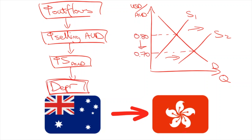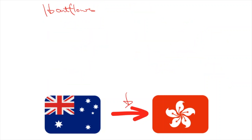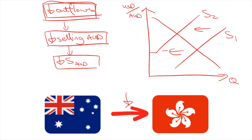So the more money we send, the greater the supply, leading to a depreciation. And conversely, when we stop sending money, the dollar appreciates again.